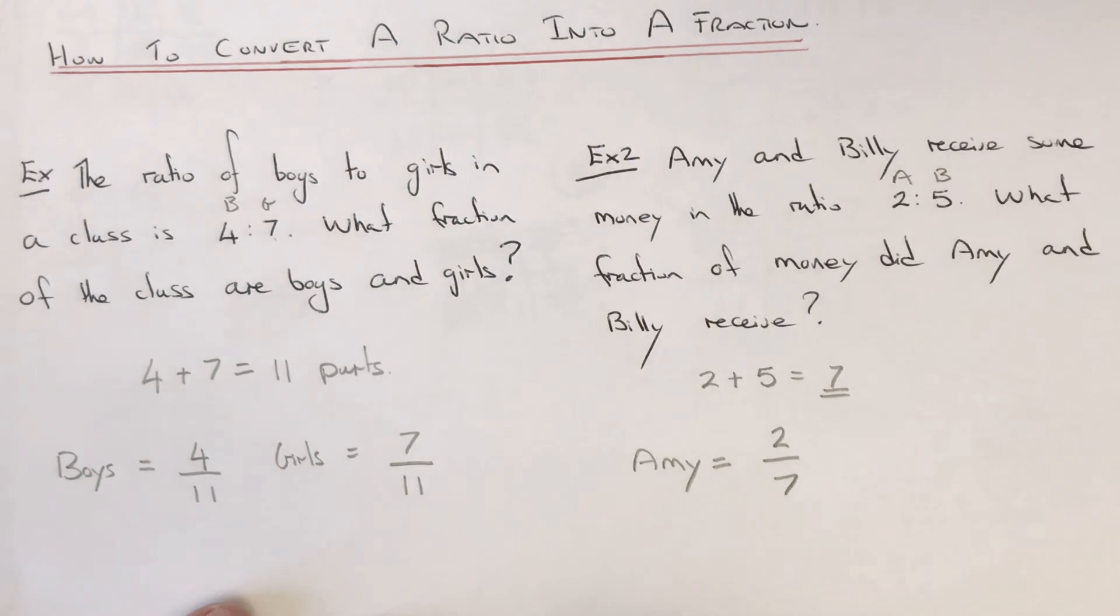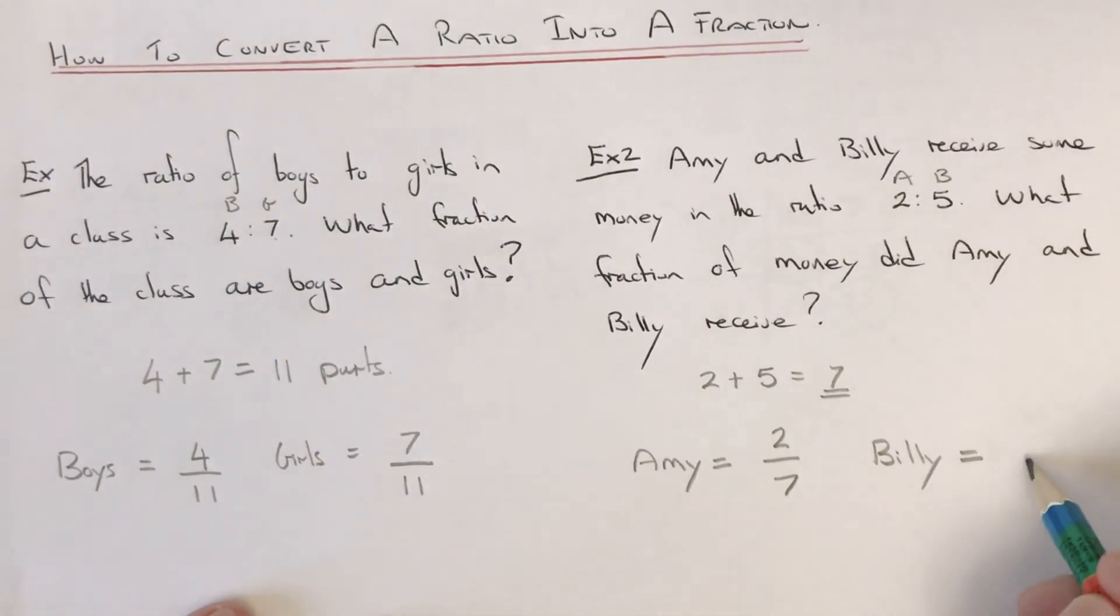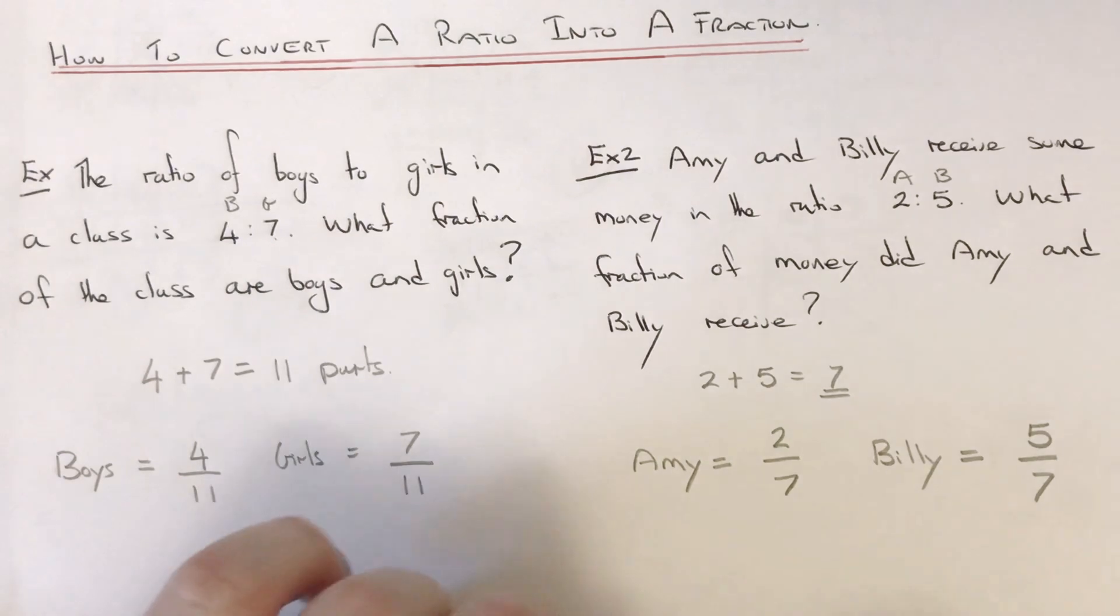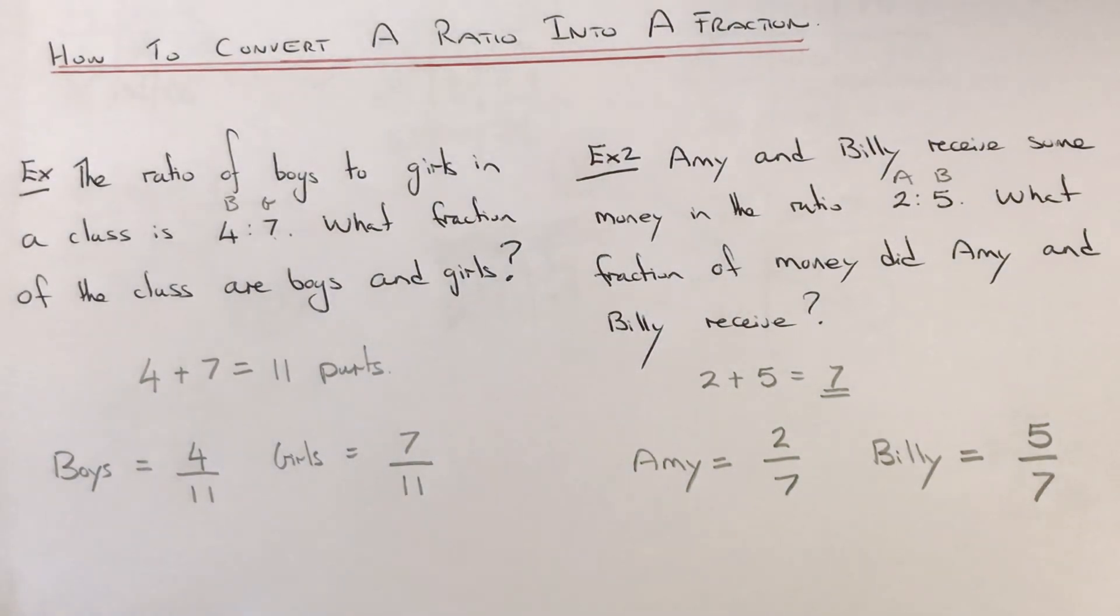Finally, let's do Billy. Again we put the denominator of 7, and Billy received 5 parts, so his fraction of money is 5/7.